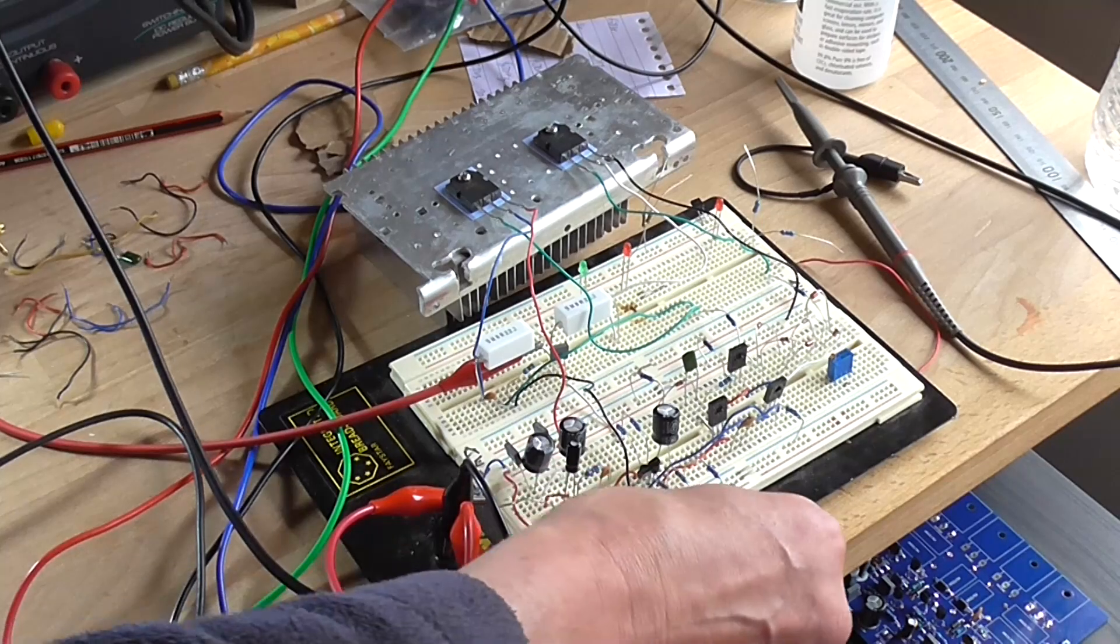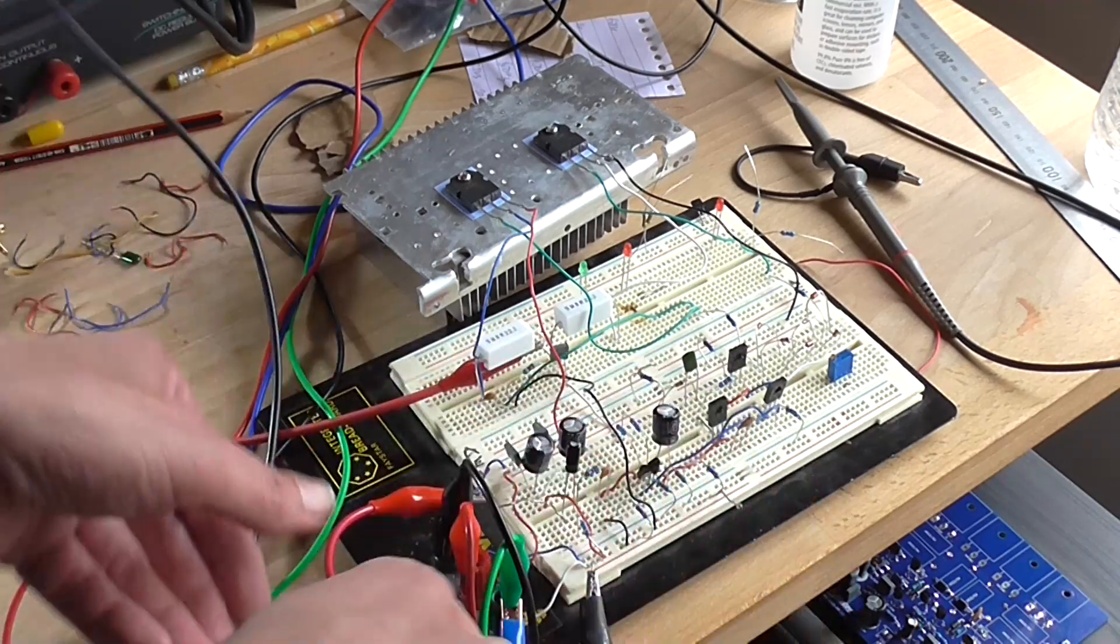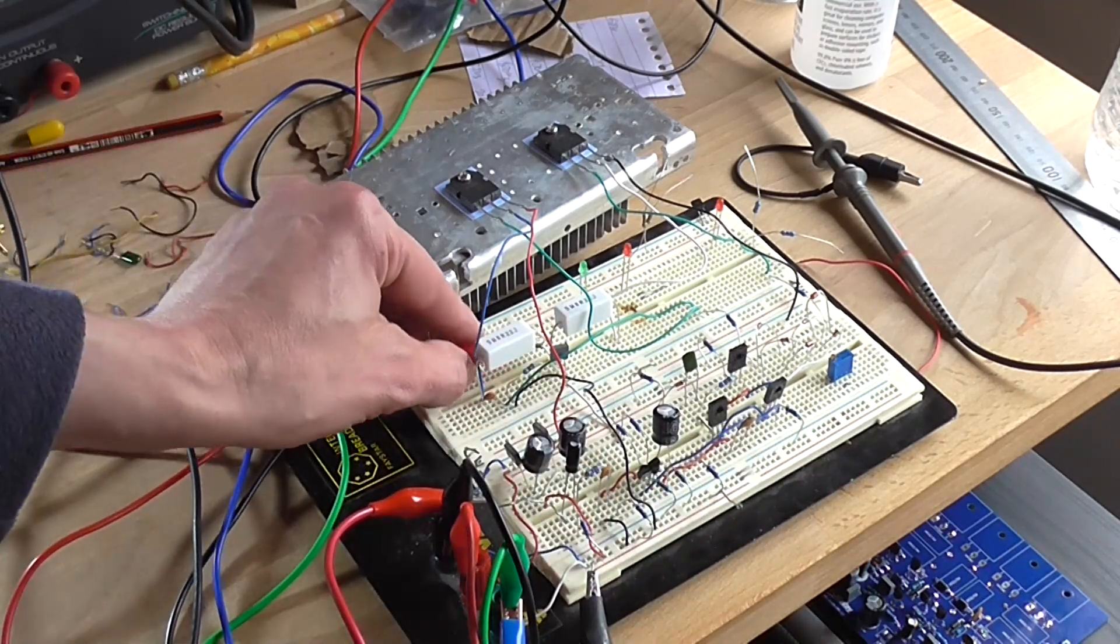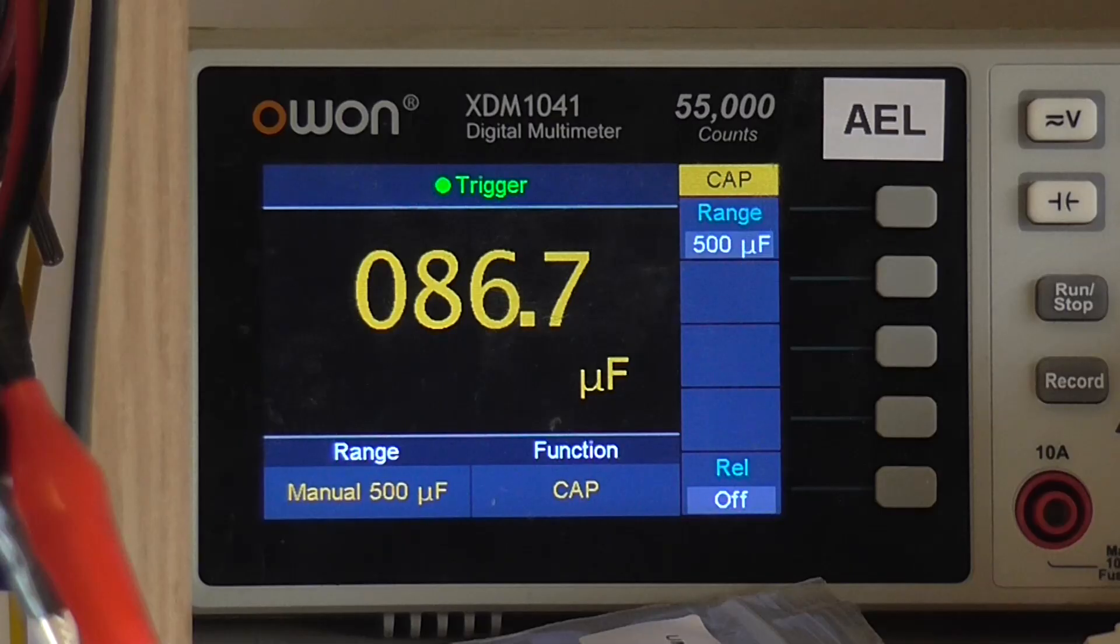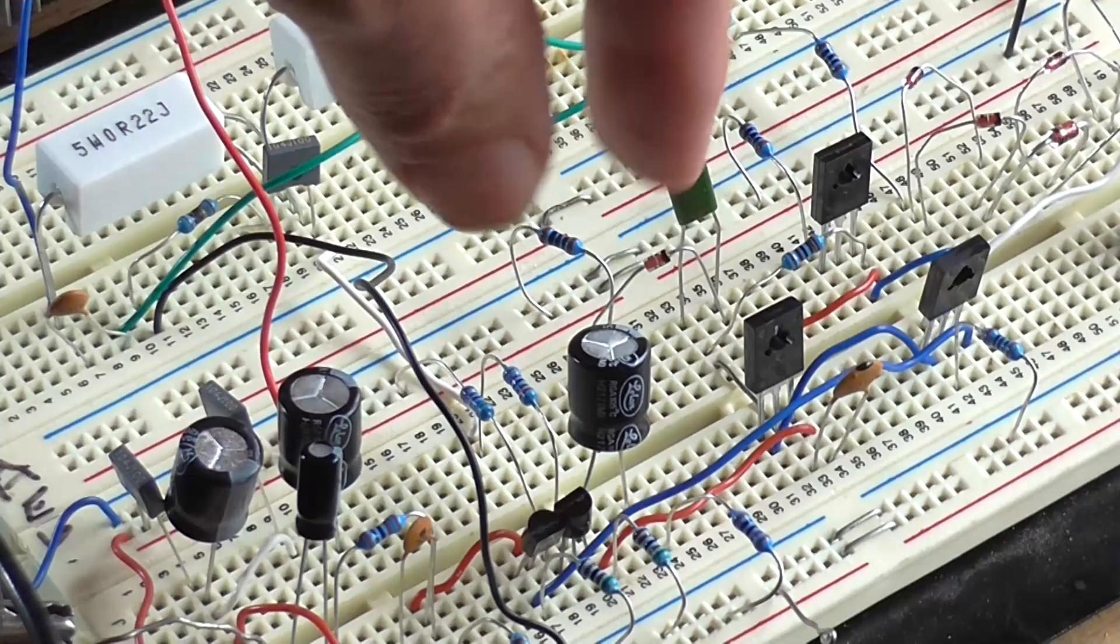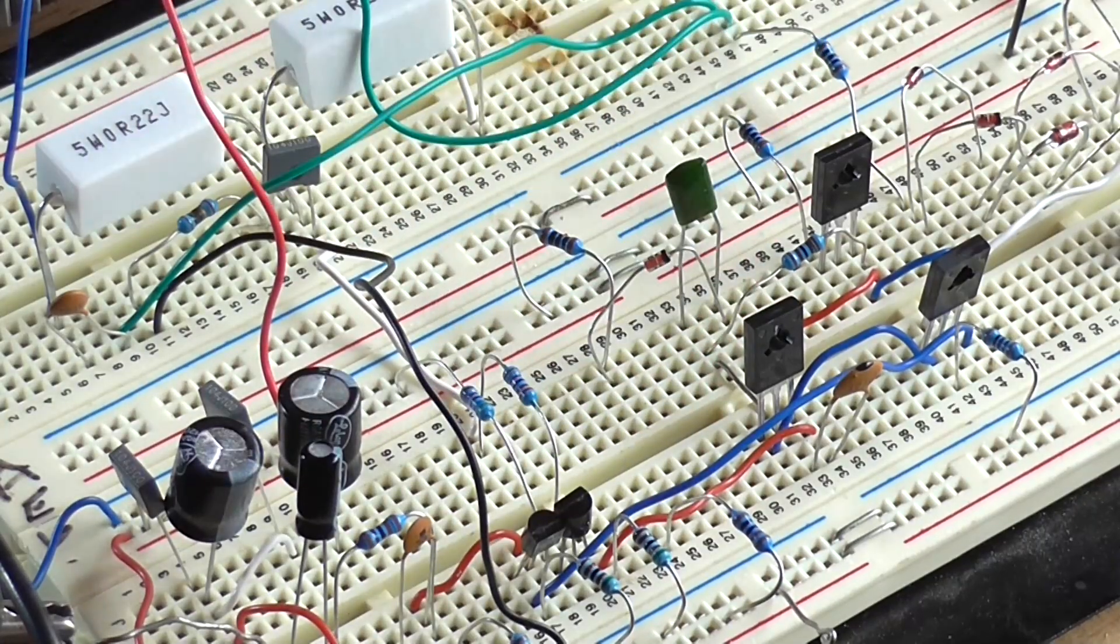But I'm going to now measure the capacitance of that bulging capacitor and see what it reads. Hmm 86.7 microfarad. Yeah. Okay. That's nowhere near right. So I'll take this new one out that I put in and I'll measure it.